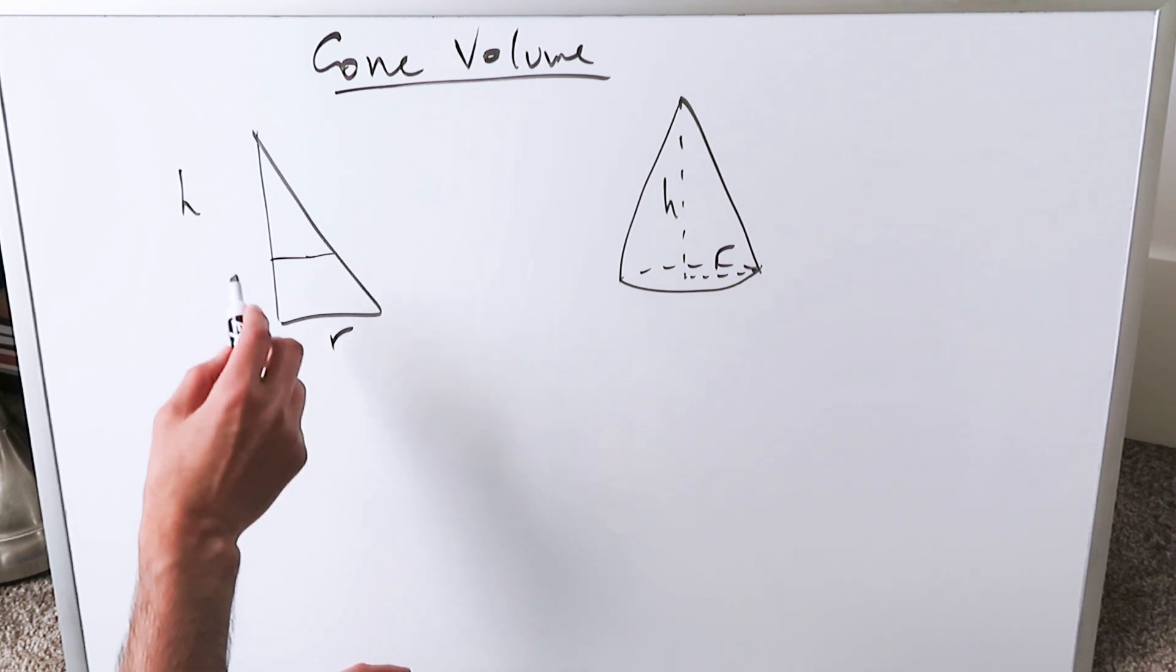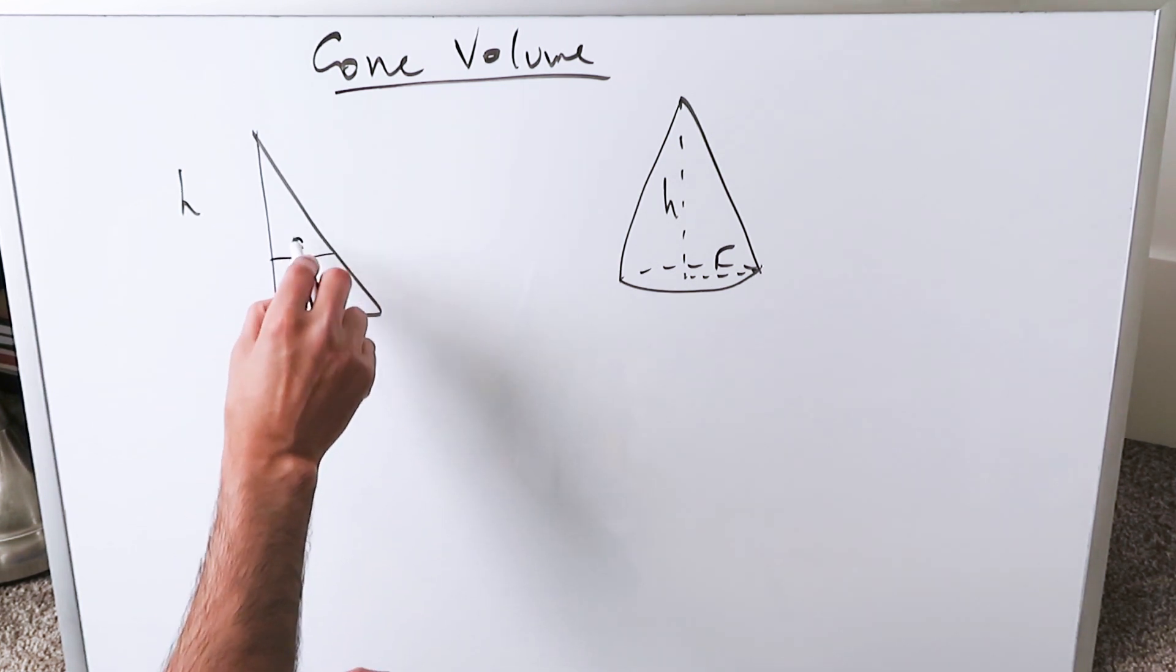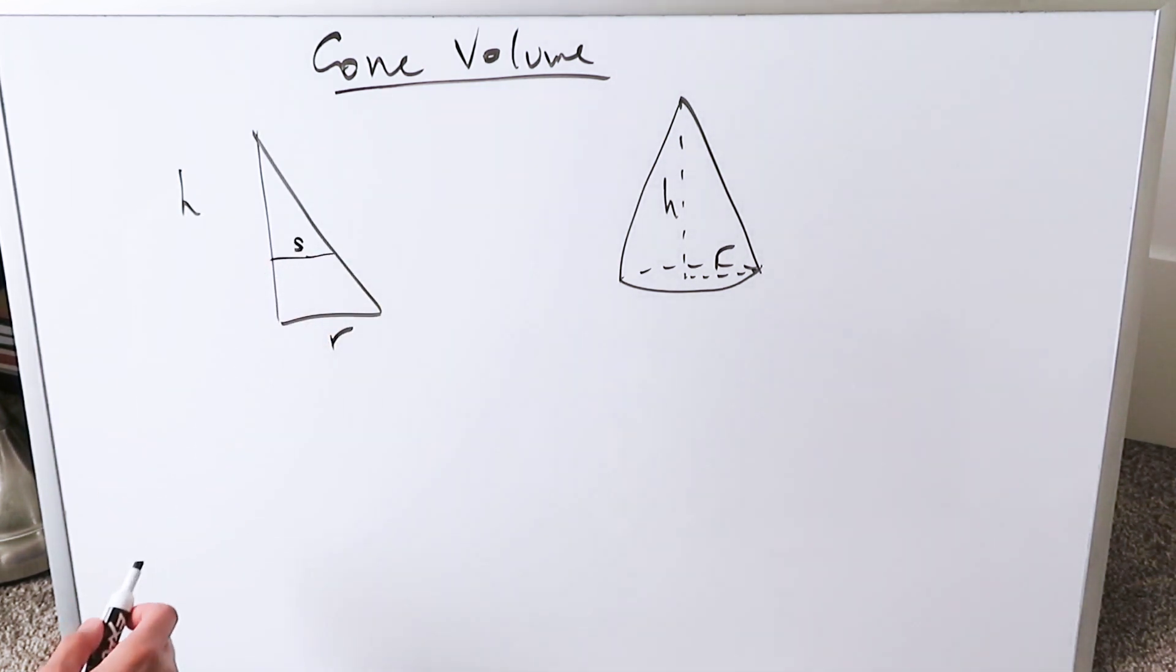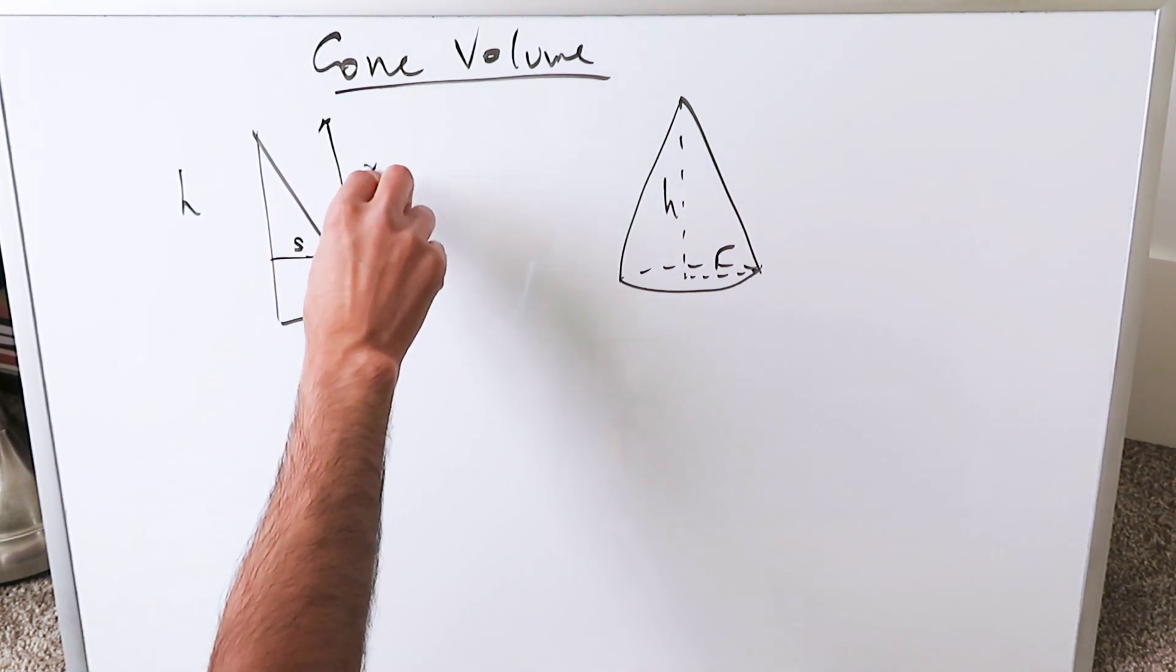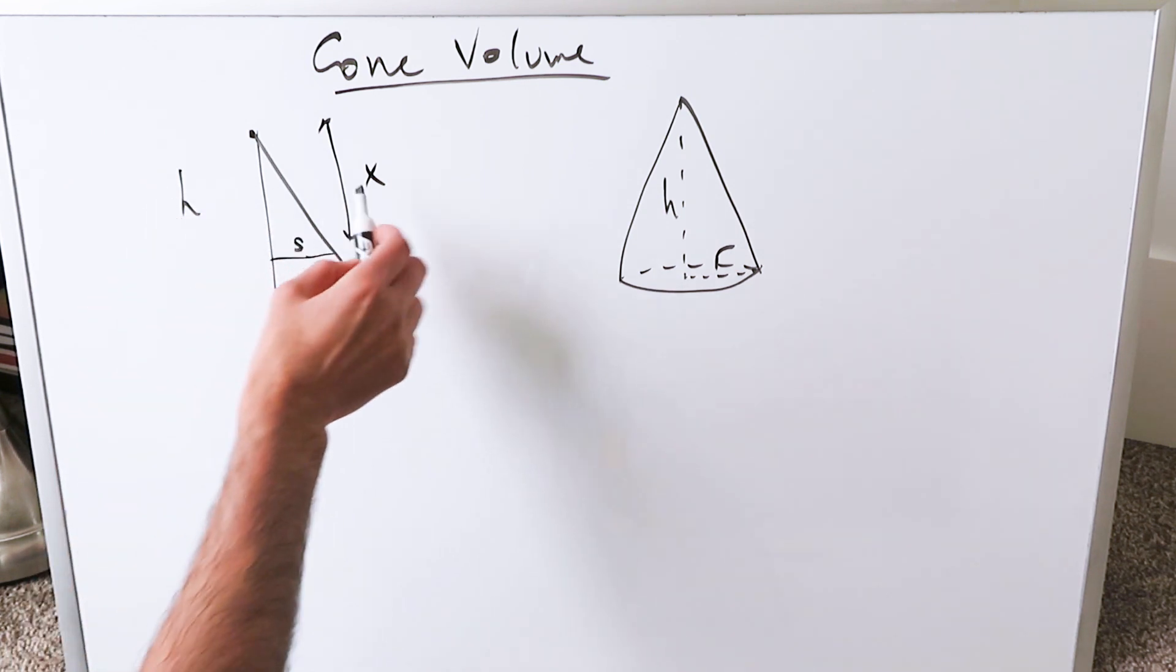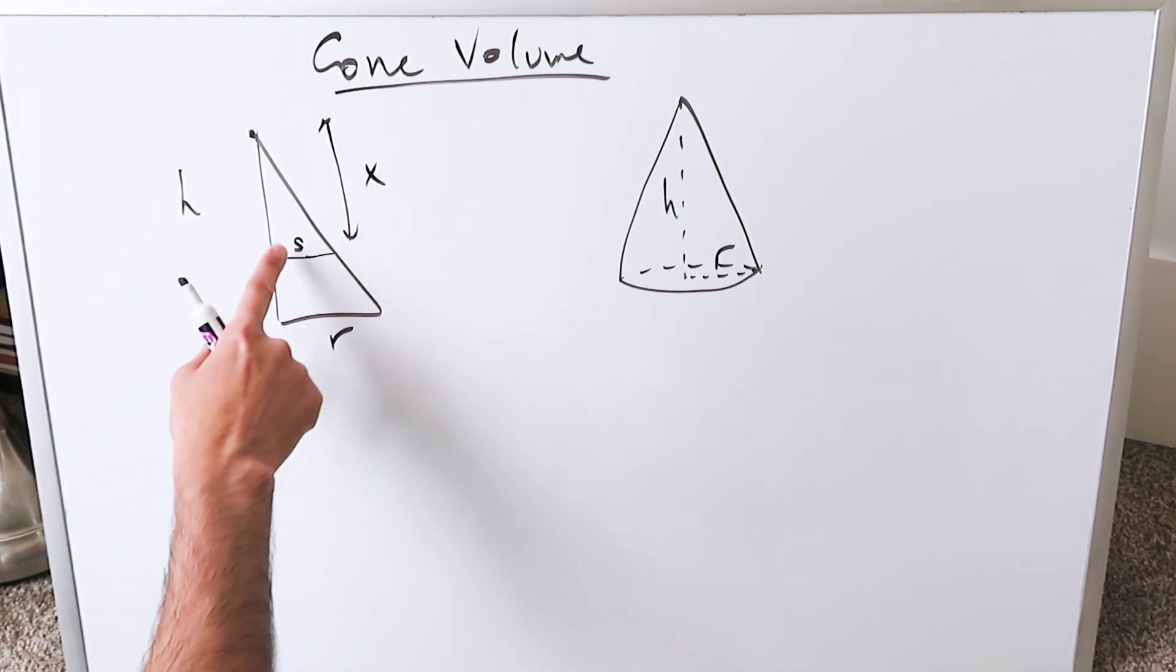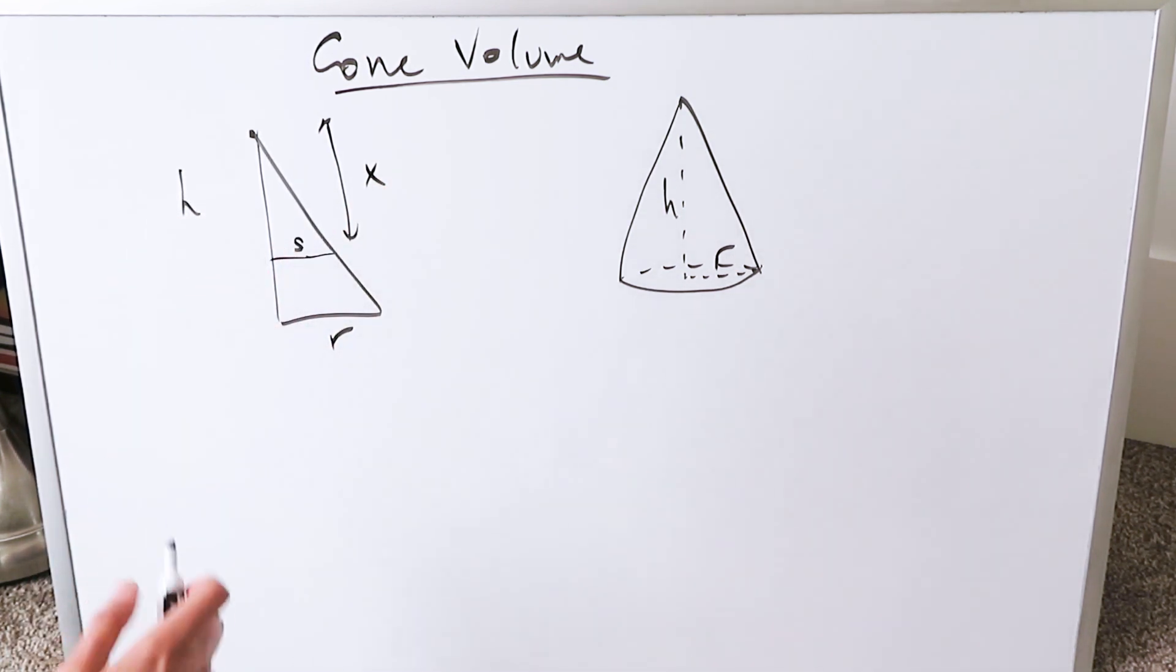It's a two-dimensional representation. Make a little line over here. This can represent a certain dimension S, which can also indicate your radius, and it's x units away from the top. You have a complete height, a reduced height, you have a complete radius, and a reduced radius.